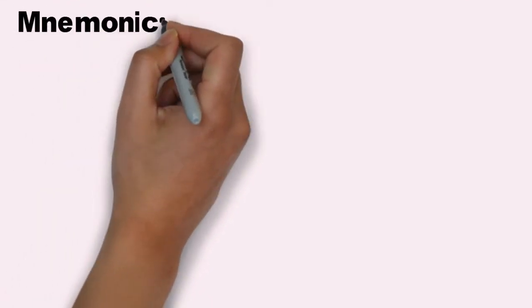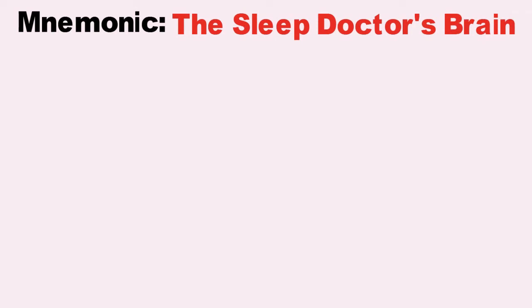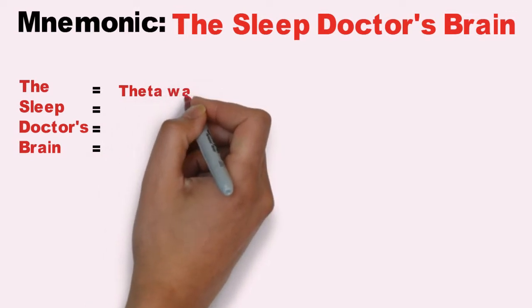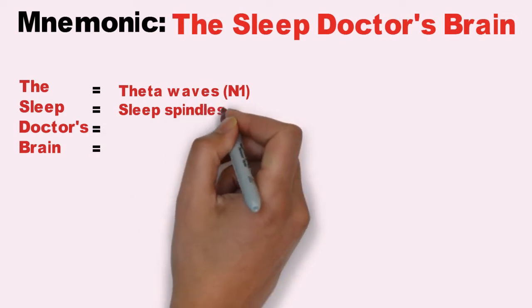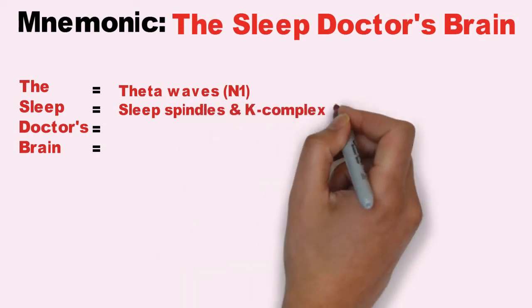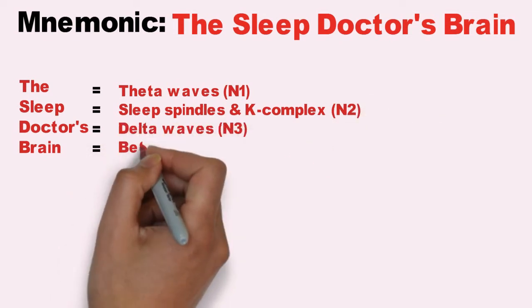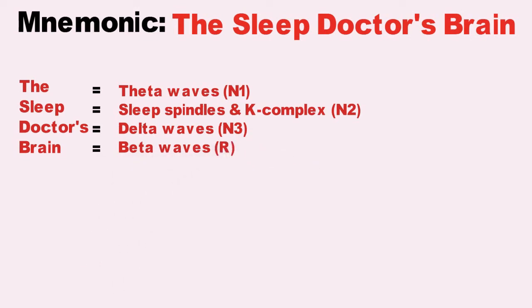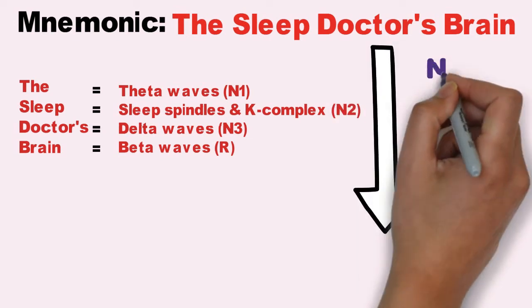A mnemonic to remember the waves associated with each sleep stage is 'The Sleep Doctor's Brain.' T-H-A stands for theta wave seen in N1; Sleep stands for sleep spindles and K-complex seen in N2; Doctor's stands for delta wave seen in N3; and Brain stands for beta wave seen in stage R. This follows in order: N1, N2, N3, and R.